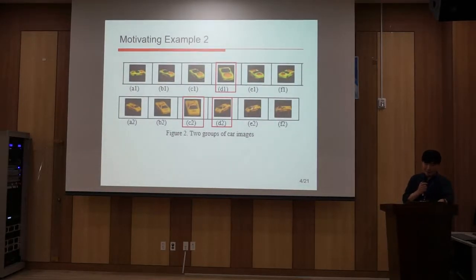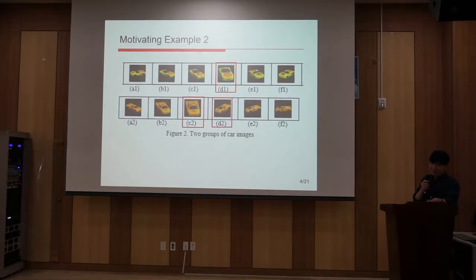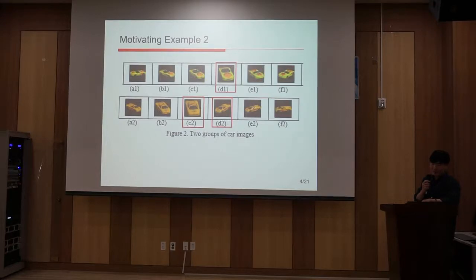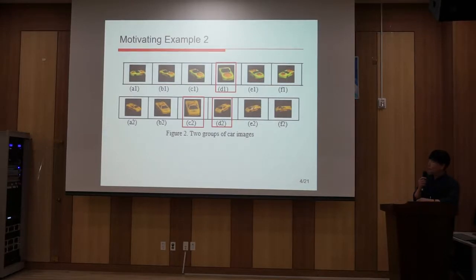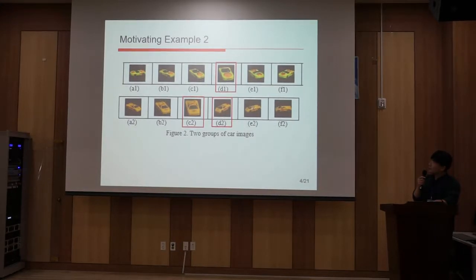This is the second motivating example. In figure 2, there are two groups of car images, and the images in each group are similar to each other. In actual similarity search, however, images from other groups may be selected as the similar ones to the query image. For example, image D1 may be selected as similar to query image C2 instead of image D2, when the conventional similarity definition is used.